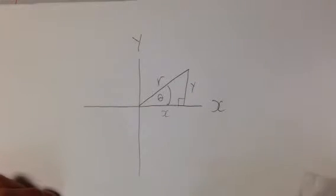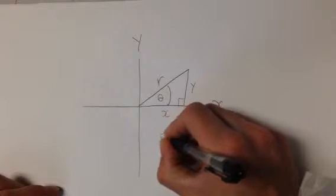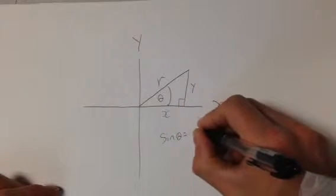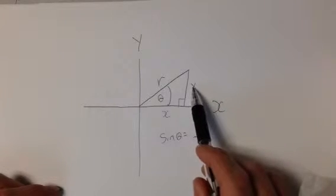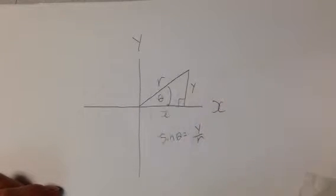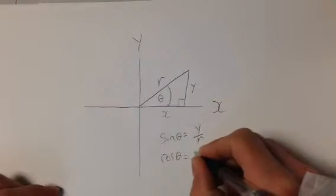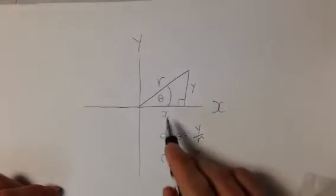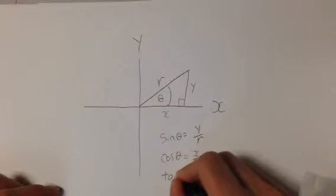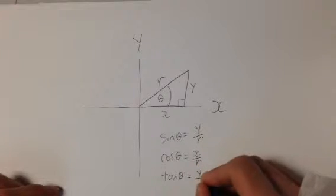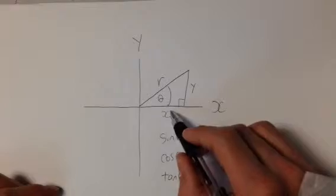We can now redefine our trig ratios. The sine of theta is equal to y over r. Y is the opposite side, and r is the hypotenuse. The cosine of theta is x over r, adjacent over hypotenuse. And the tan of theta is y over x. That's our opposite and adjacent.